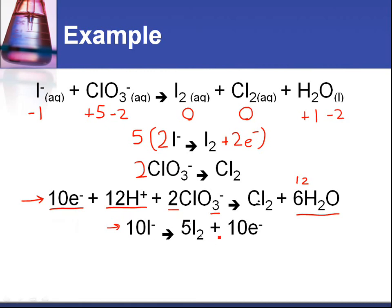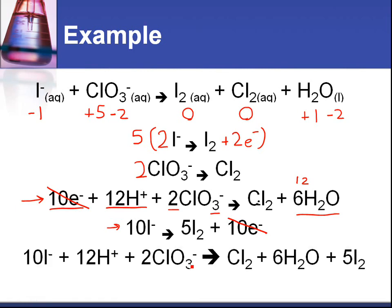What we need to do next is cancel out what appears on both sides. We've got 10 e negative there and 10 e negative there. They cancel out. Electrons should always cancel out. Then we combine the two half equations together, which gives us this equation: 10 I negative plus 12 H plus plus 2 ClO3 negative gives you Cl2 plus 6 H2O plus 5 I2.